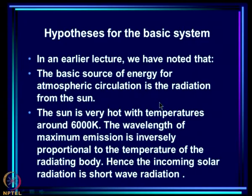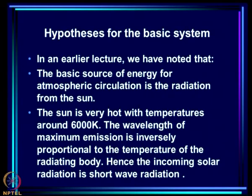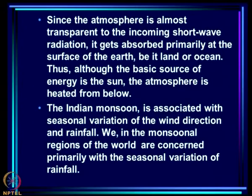Now, what are the hypotheses that can explain the seasonal variation we have seen in pressure, winds, and — more importantly — rainfall? To understand those hypotheses we must recall that the basic source of energy for atmospheric circulation is solar radiation. The sun, at about 6000 K, emits short-wave radiation. Since the atmosphere is almost transparent to incoming short-wave radiation, it is absorbed primarily at the surface of the Earth — land or ocean. Thus, although the basic energy source is the sun, the atmosphere is actually heated from below.